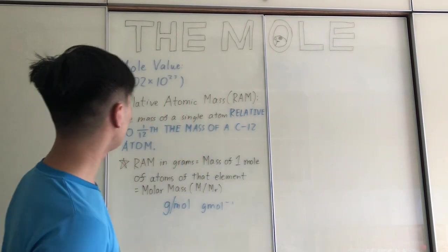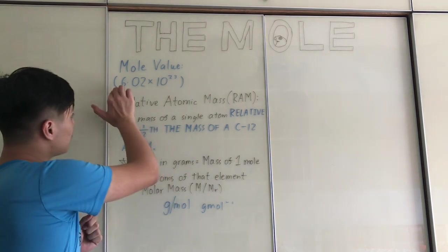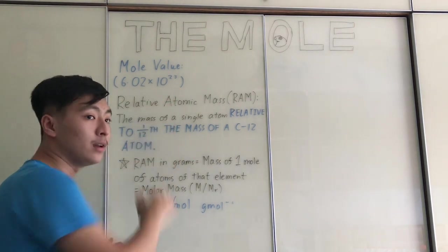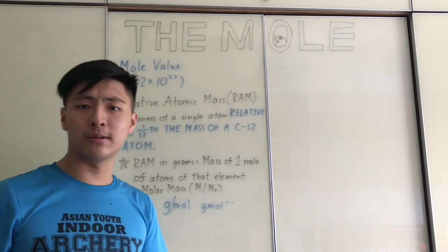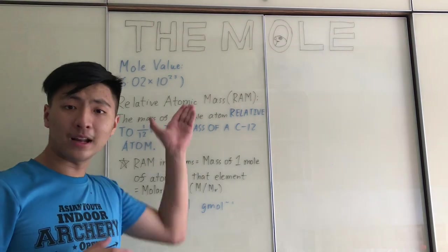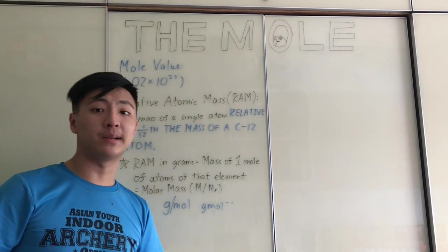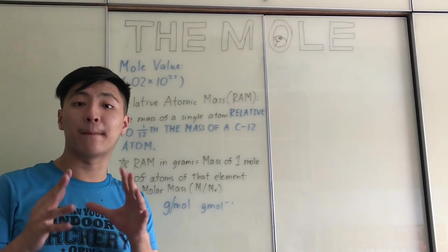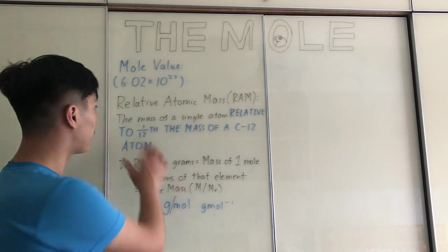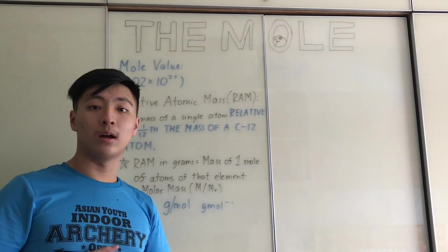If you remember from IGCSE, the mole value is 6.02 times 10 to the power of 23, otherwise known as Avogadro's number. The value itself doesn't really mean that much until we talk about relative atomic mass, or RAM.